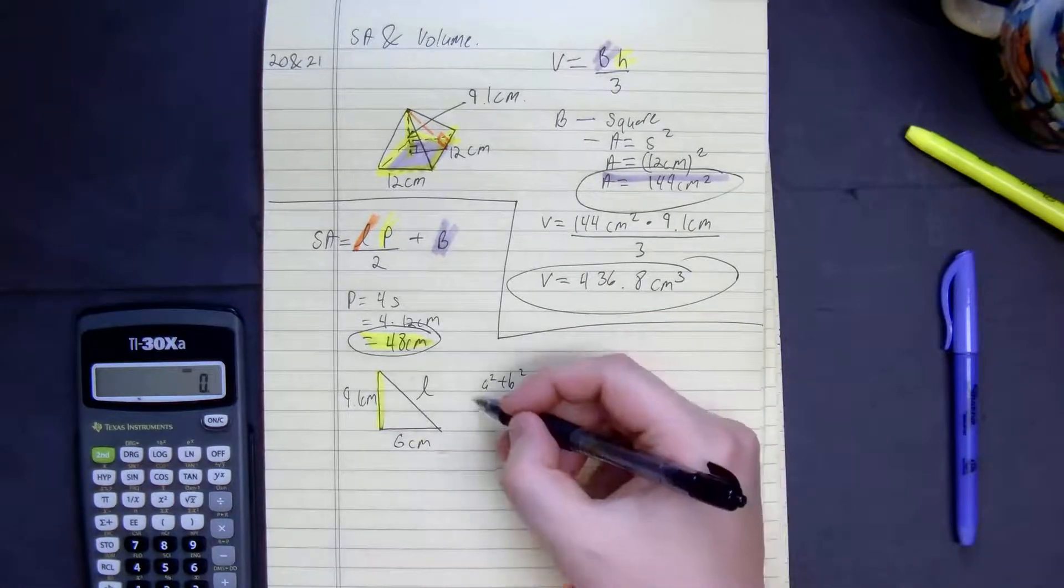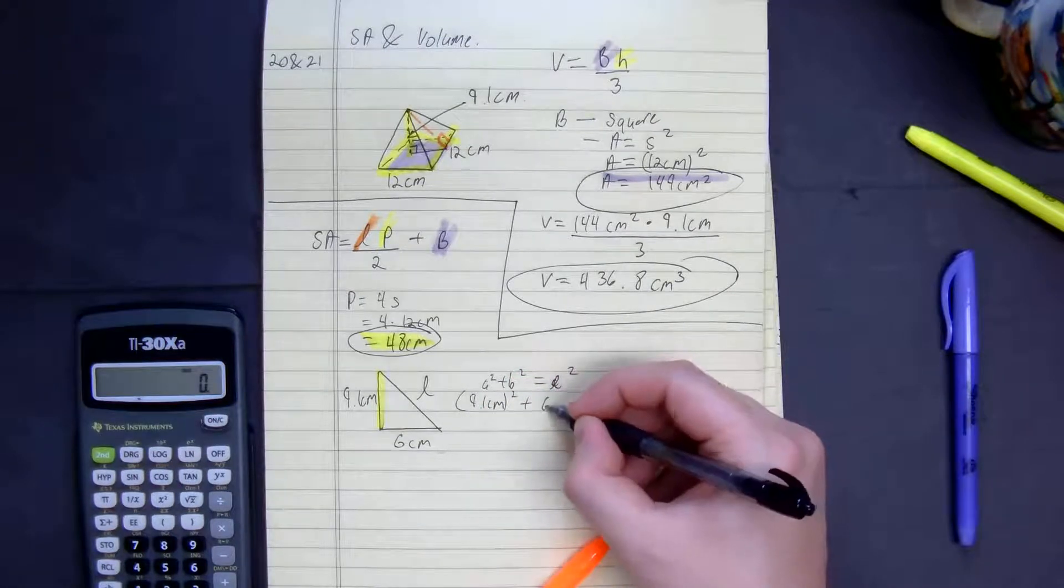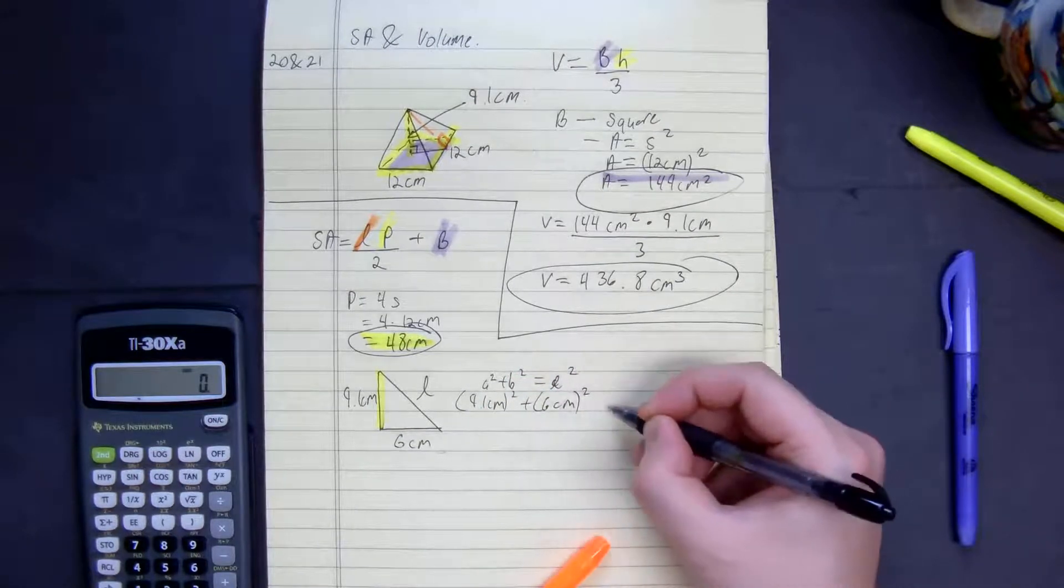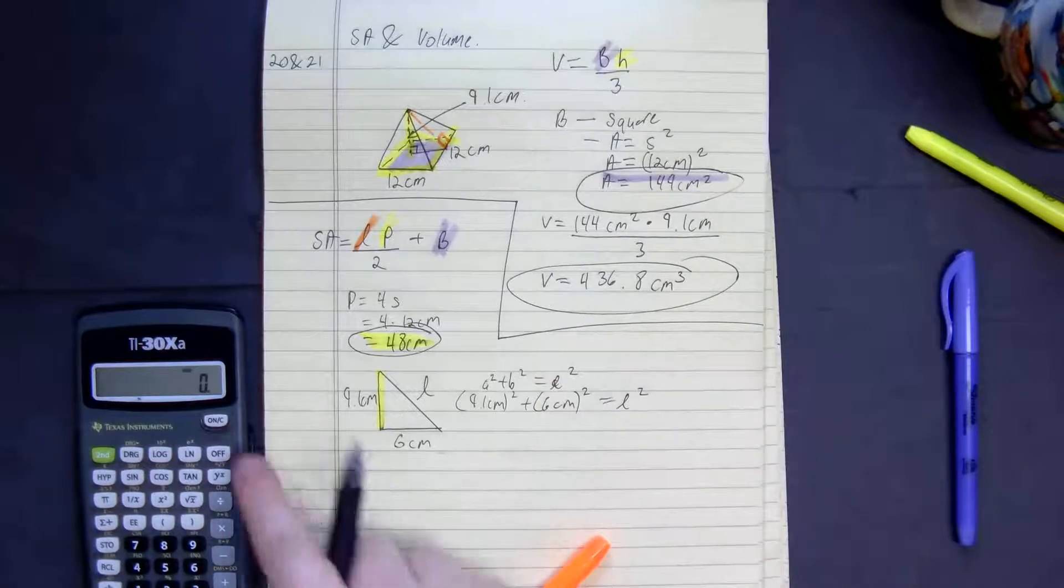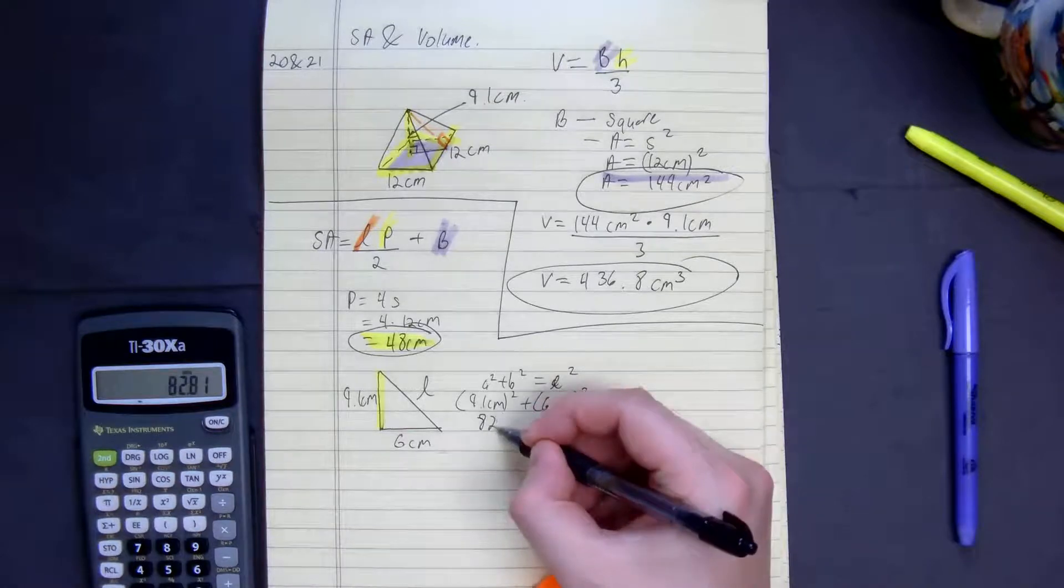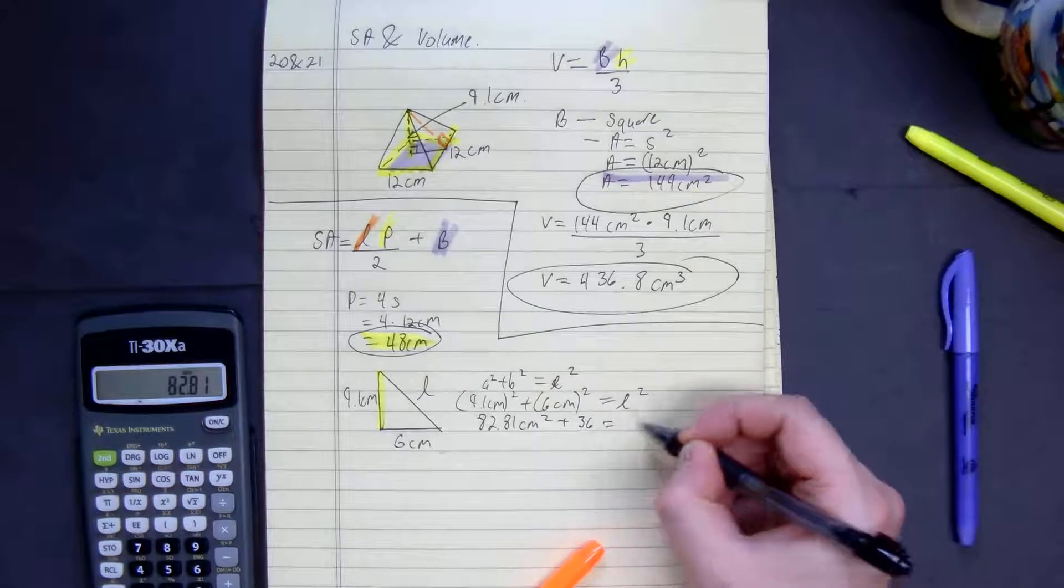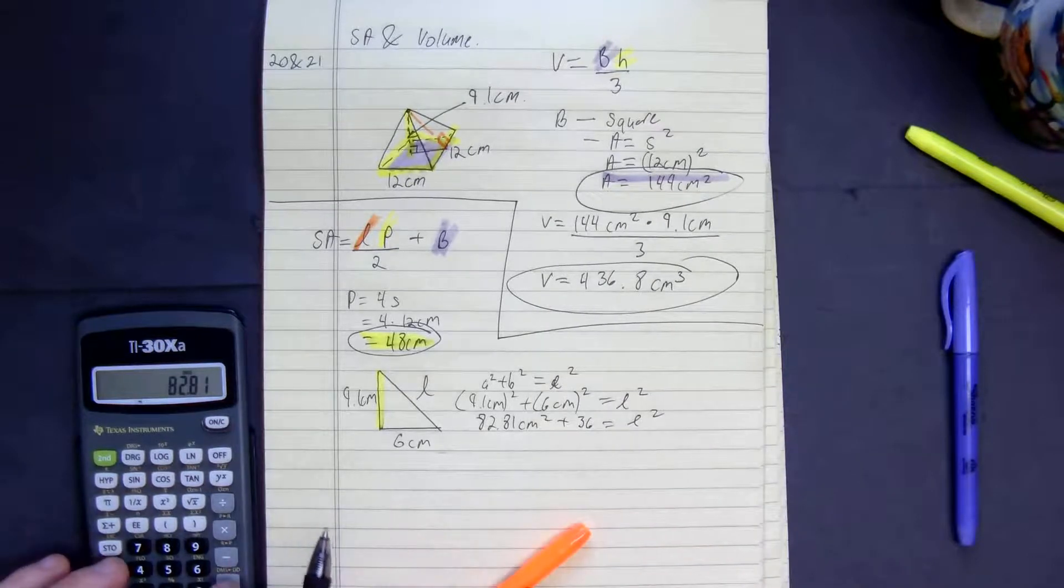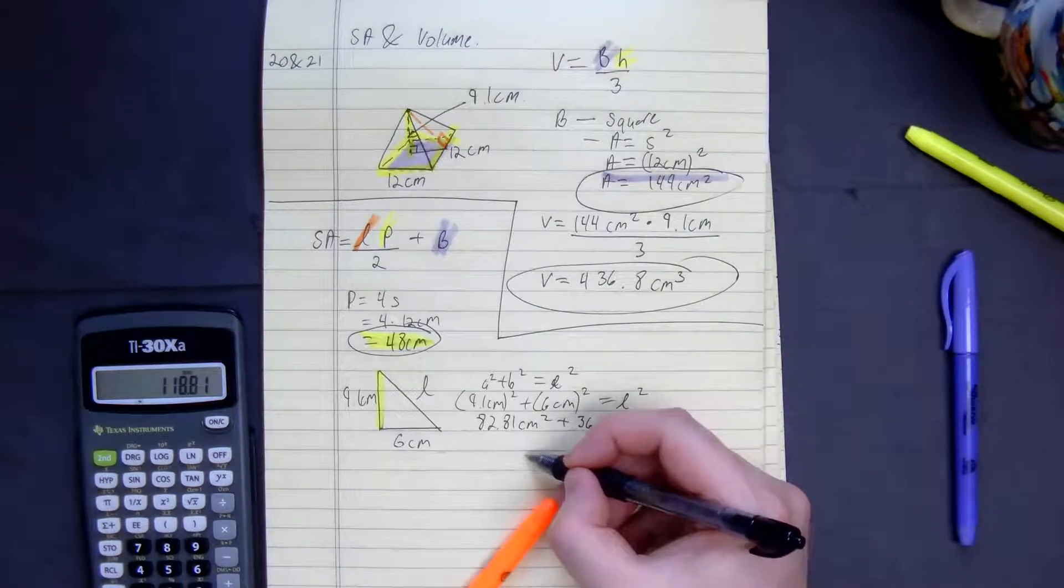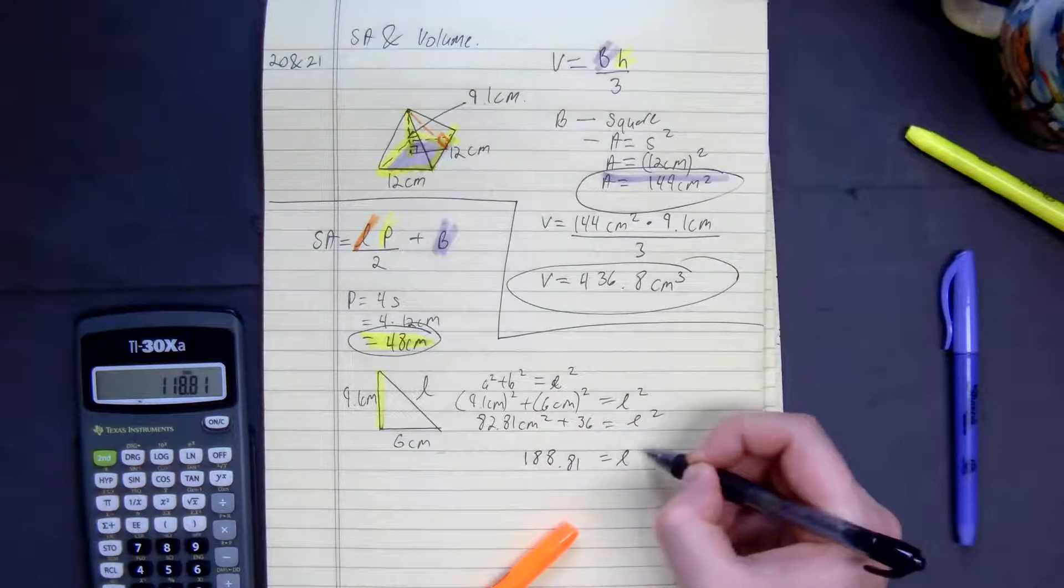So we get 9.1 centimeters squared plus 6 centimeters squared equals that. So 9.1 squared, 82.81 centimeters squared plus 36 equals the slant. Plus 36, 118.81 equals the slant.